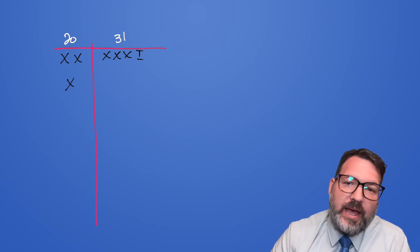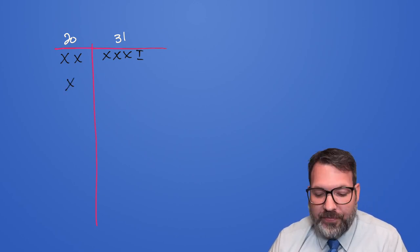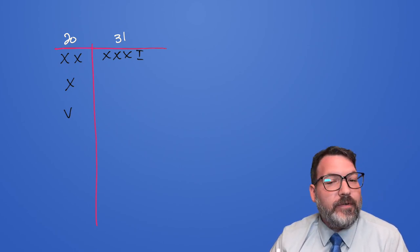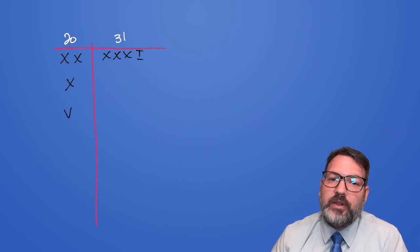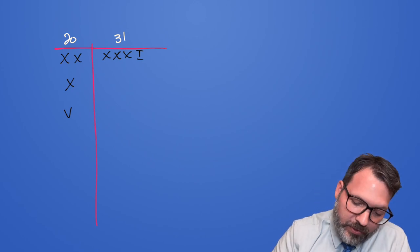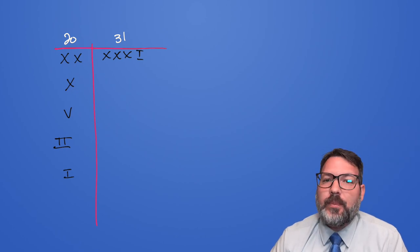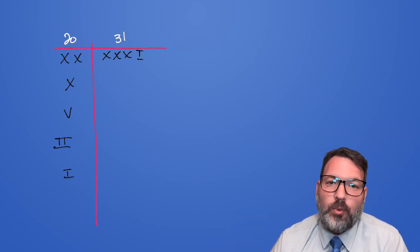Half of 20 is 10, so that's going to be a single X. Half of 10 is 5. The symbol for 5 in Roman numerals is V. Half of 5 is 2. We know that there's a remainder of 1, but we're going to ignore that and simply write down 2. And then half of 2 is 1. And that's when we stop. We keep dividing by 2 until we get to 1.